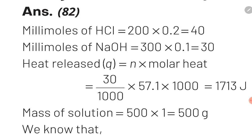Millimoles of HCl = 200 × 0.2 = 40. Millimoles of NaOH = 300 × 0.1 = 30. Since NaOH is the limiting reagent, 30 millimoles of water are formed. NaOH undergoes complete neutralization and some HCl is left over.